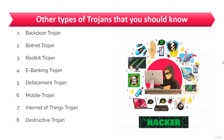A backdoor Trojan is a program which bypasses the system's customary security mechanisms to gain access to restricted areas of a computer system. Backdoors are used by attackers to have uninterrupted access to the target machine. A great example is Poison Ivy, which gives the attacker practically complete control over the infected computer. Once the backdoor is executed, it copies itself to either the Windows folder or the Windows System32 folder.